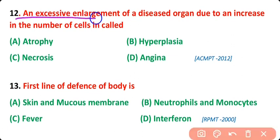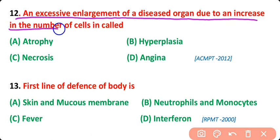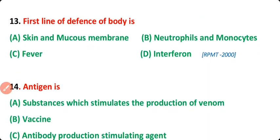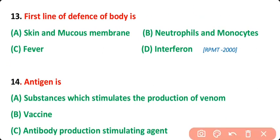Question number 12: An excessive enlargement of a diseased organ due to an increase in number of cells is called atrophy, hyperplasia, necrosis, or angina? The correct answer is option B. The increase in number of cells is known as hyperplasia, while the increase in size of a cell is known as hypertrophy.